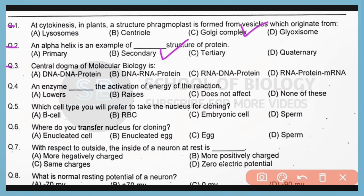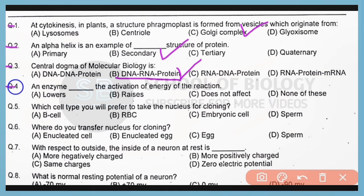Question 3. The central dogma of molecular biology describes DNA being transcribed to RNA, and then RNA being translated to protein. Correct answer is option B.